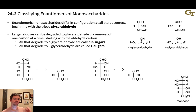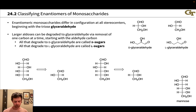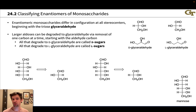So how does this DL system work? Well, for sugars it all starts with the triose glyceraldehyde — arguably the simplest sugar, the simplest aldose.